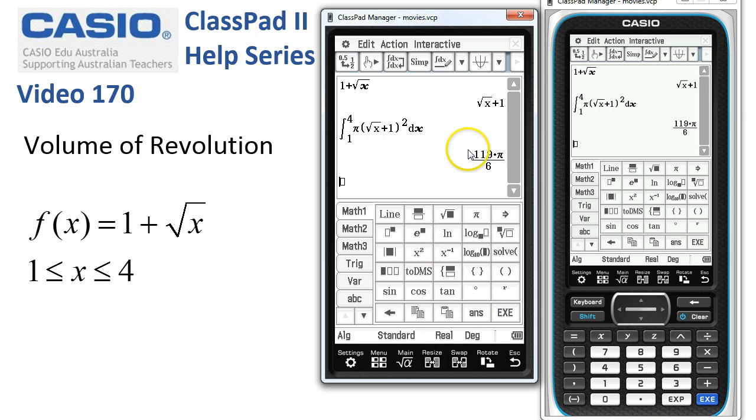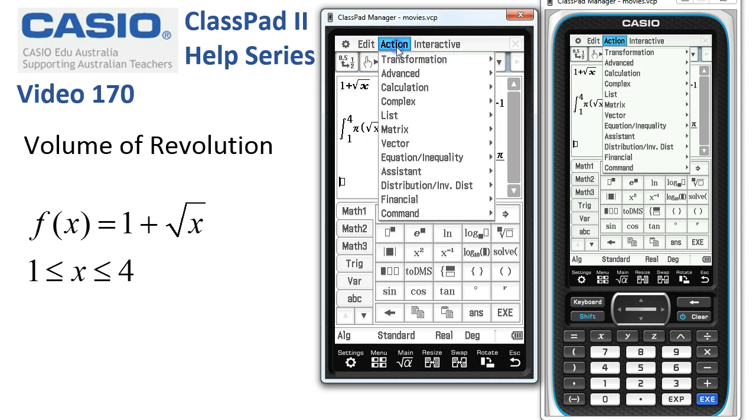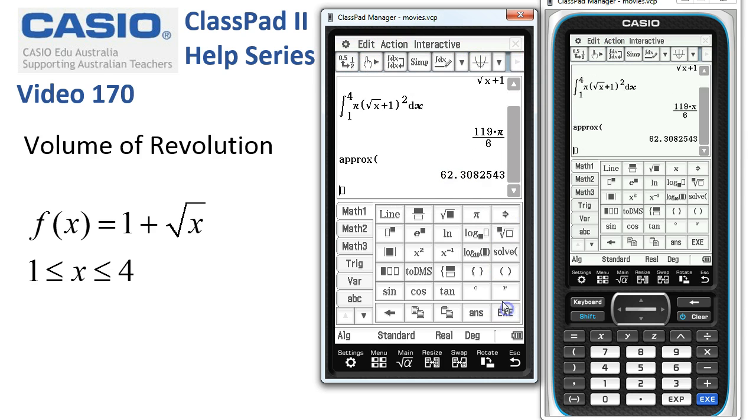And we get an exact value here. And if I choose action transform approx, then there's a decimal approximation to it using the approx tool. Now that's pretty okay.